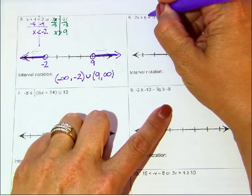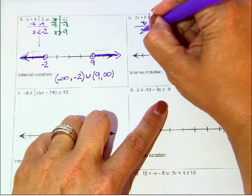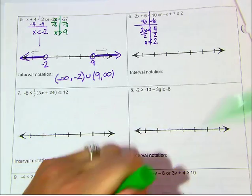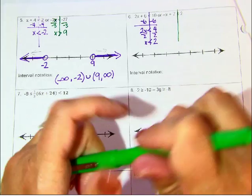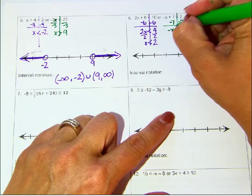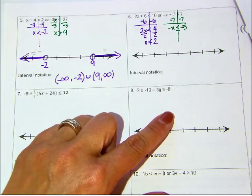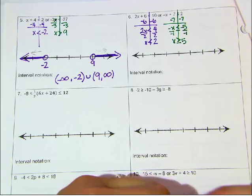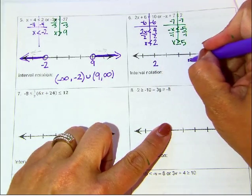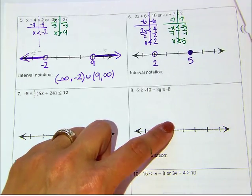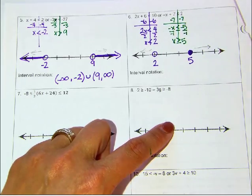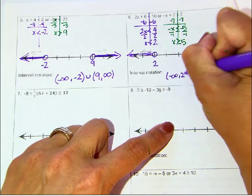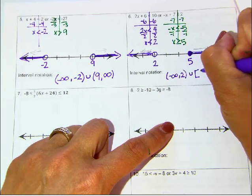Number 6. For the left inequality, I need to subtract 6, so I get 2x is less than 4. Divide by 2, I get x is less than 2. For the other one, I'm going to subtract 7, so I have negative x is less than or equal to negative 5. To get rid of that negative in front, divide by negative 1. So I have x — flipping my symbol — and it's going to be 5. At 2 and 5: 2 is an open circle, 5 is a closed circle. x is less than 2 and x is greater than or equal to 5. Interval notation: (-∞, 2) union [5, ∞).